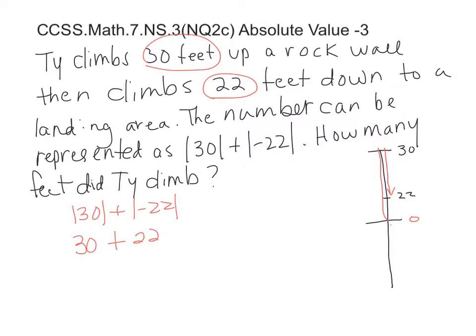So all together, Ty had climbed 52 feet. He went up 30 and back down 22, but all together he made 52 feet.